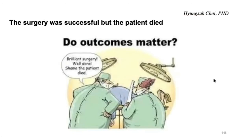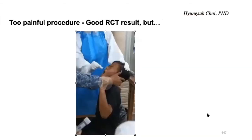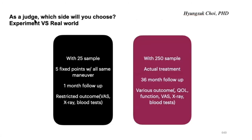A lot of researchers are focused on very strict and objective data, like how surgery was done or how a biomarker changed. A patient might be experiencing extreme pain or very poor quality of life, even though their biomarkers are improved or the surgery was successful. Which side will you choose — experiment or real life?